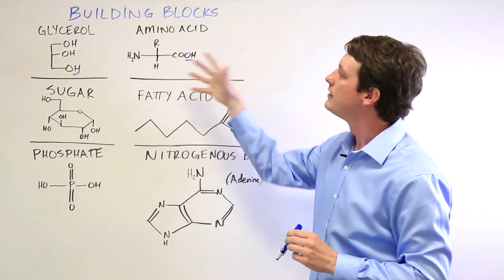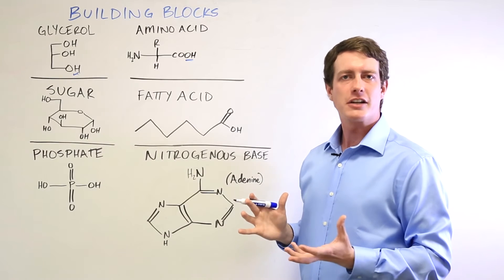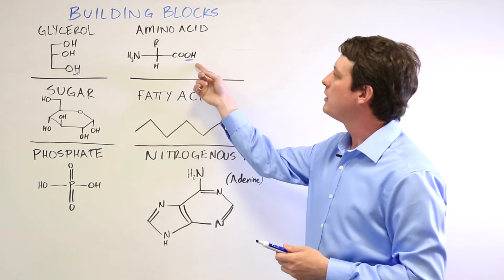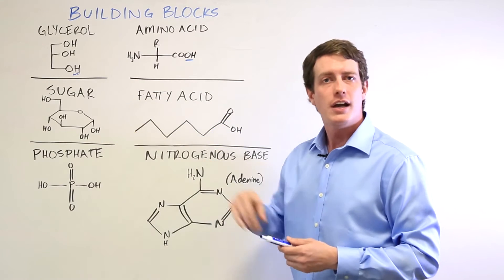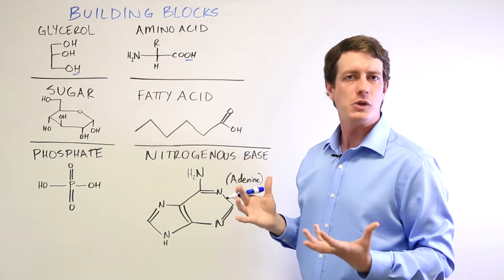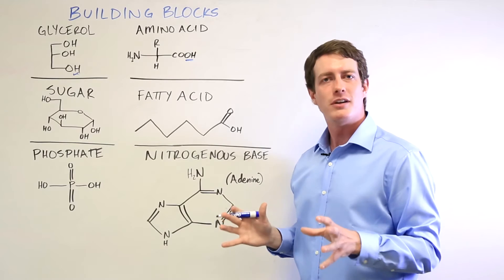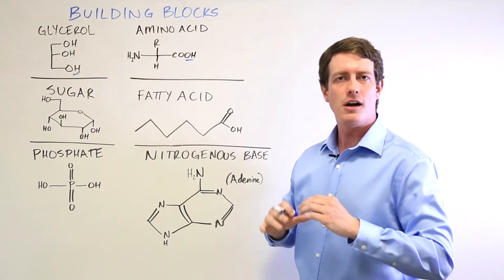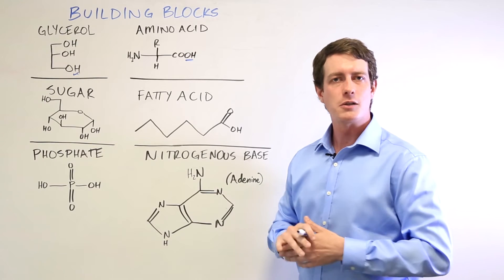Because these are all joined using condensation reactions, it allows you to mix and match. So for example, you can have amino acids joined with sugars and get peptidoglycans, which are the major component of the bacterial cell wall, or proteoglycans, which are a major component of the extracellular matrix.